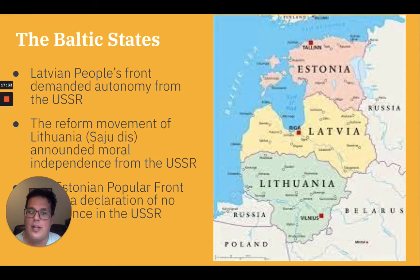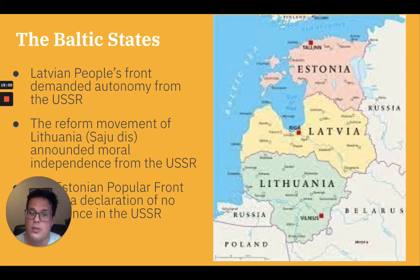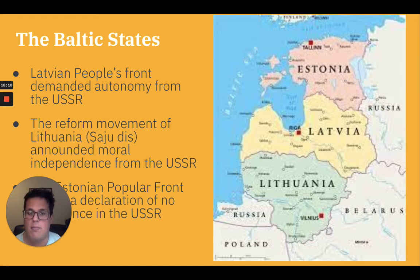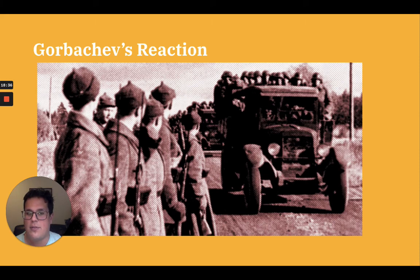The Baltic states — Estonia, Latvia, and Lithuania — had been parts of the Russian Empire until the collapse of Russia in the First World War, when they gained temporary independence. They were absorbed by the Soviet Union in 1940, occupied by Germany from 1941 to 1944, and then again merged with the Soviet Union. Glasnost and Perestroika encouraged reformers and nationalists to press for independence. In 1988, so-called Popular Fronts — coalitions of reformers — formed in all three republics. The Latvian People's Front demanded autonomy within the USSR, the Reform Movement of Lithuania announced its moral independence, and the Estonian Popular Front issued a declaration of no confidence in the USSR. By 1990, all three declared independence. Initially Gorbachev reacted strongly, imposing an economic blockade on Lithuania in April 1990, and in January 1991, Soviet troops entered all three Baltic states under pretext of searching for military deserters, but failed to take control of communications at the hands of protesters.